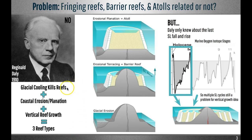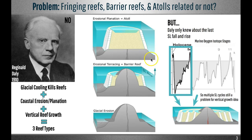Daly speculated that reefs couldn't withstand the cold glaciations, and as shorelines lost their reef protection, they began to erode. His idea was that the three reef types didn't form an evolutionary sequence, as Darwin proposed, but were instead related to the amount of shoreline erosion. Partial erosion would produce a shelf where a barrier reef would grow during sea level rise, and if the island was completely eroded, an atoll would form instead. Daly's idea embraced sea level change during the ice age, but it was still unknown that the ice age consisted of multiple cycles, so Daly's idea had the same problem as Darwin's.